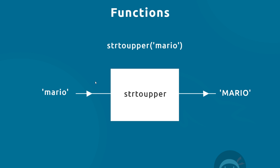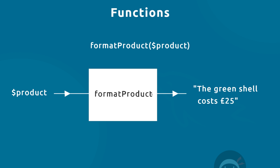We've actually been invoking some functions already in this course. For example, `strtoupper` expects an input string which might be lowercase, we pass that into the function, it runs some code, and spits out an uppercase string. That's an inbuilt PHP function, and there are many different inbuilt PHP functions we can use.